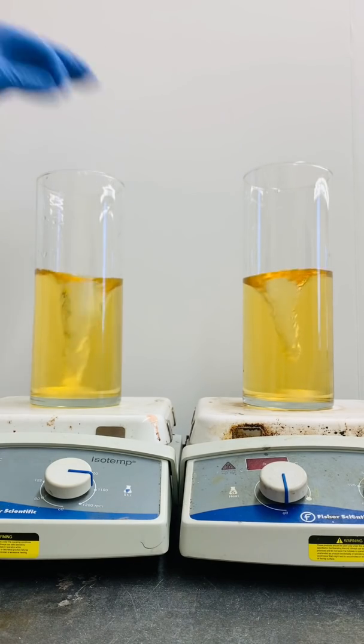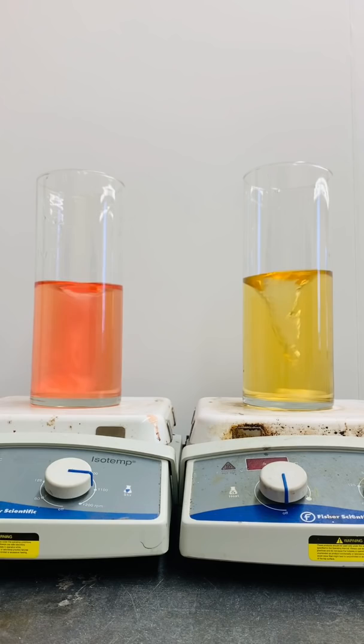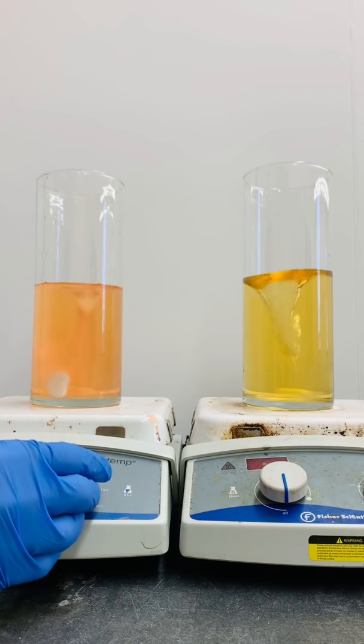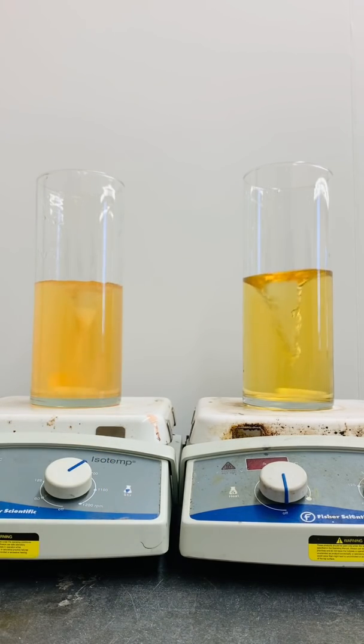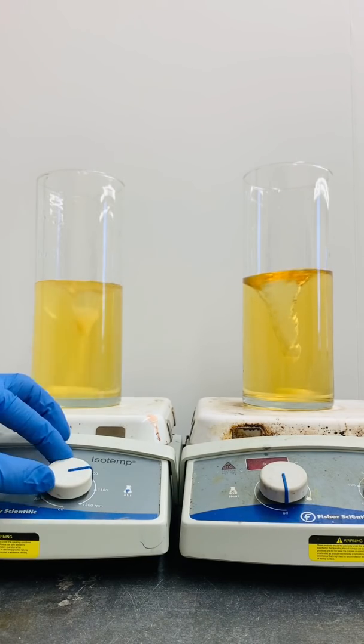Let's add a tablet of Alka-Seltzer to this solution on the left. The initial red color we see tells us that the solution has changed to strongly acidic, but you'll notice it relaxes back to a yellow color, indicating a pH of 6 again.